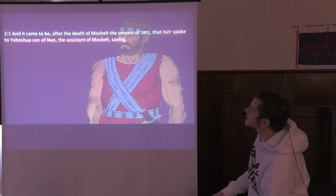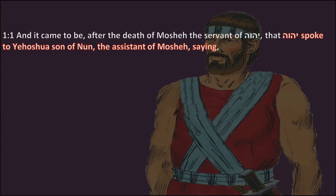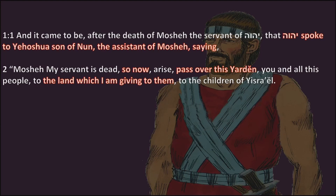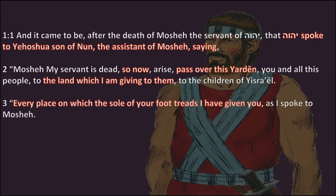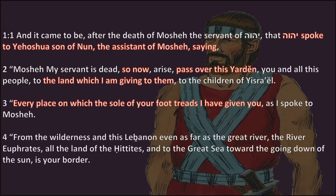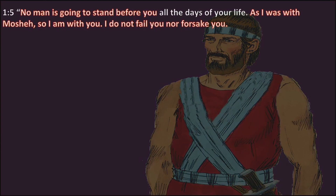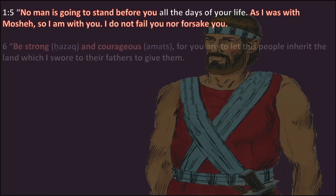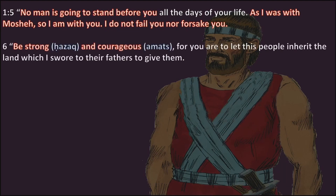Joshua 1:1 — 'It came to be after the death of Moshe the servant of Yehovah that Yehovah spoke to Yahushua son of Nun, the assistant of Moshe, saying: Moshe my servant is dead. Now arise, pass over this Jordan, you and all this people, to the land which I am giving them. Every place on which the sole of your foot treads I have given you, as I spoke to Moshe — from the wilderness and Lebanon to the great river, the Euphrates, all the land of the Hittites to the Great Sea toward the going down of the sun is your border.'